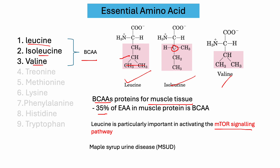Valine was first isolated from casein and is named valine because it has structural similarity with valeric acid, which comes from the root of valerian plants. If there is any dysfunction of the oxidation process of these three branched-chain amino acids, one disease forms — this disease is called maple syrup urine disease.